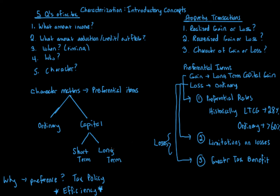The difference between short-term and long-term capital gains will be discussed in a later video, but it's important to understand that long-term capital gains are what we strive to get when we look at preferential items. That's for gains. If we have losses, we want ordinary, because capital losses are severely limited. And ordinary losses will be able to offset ordinary income, whereas capital losses generally are only able to offset capital income.